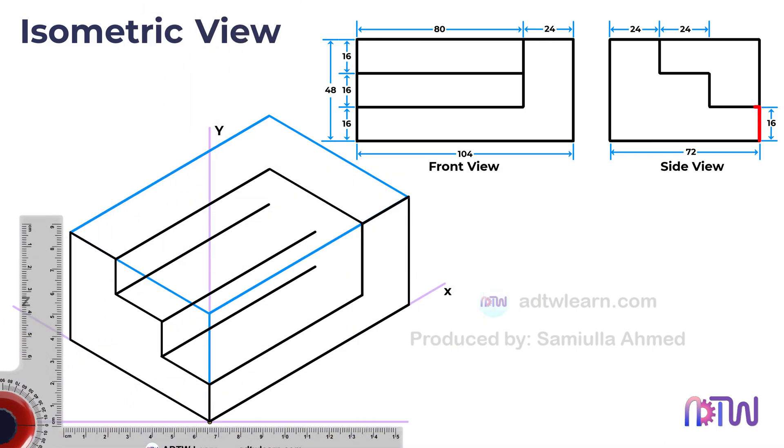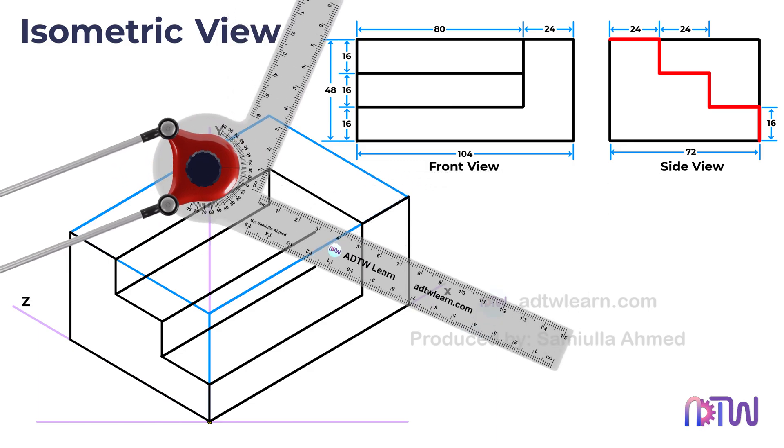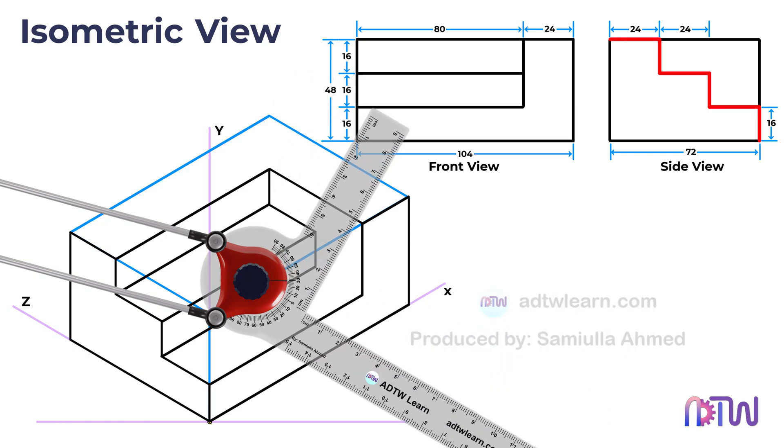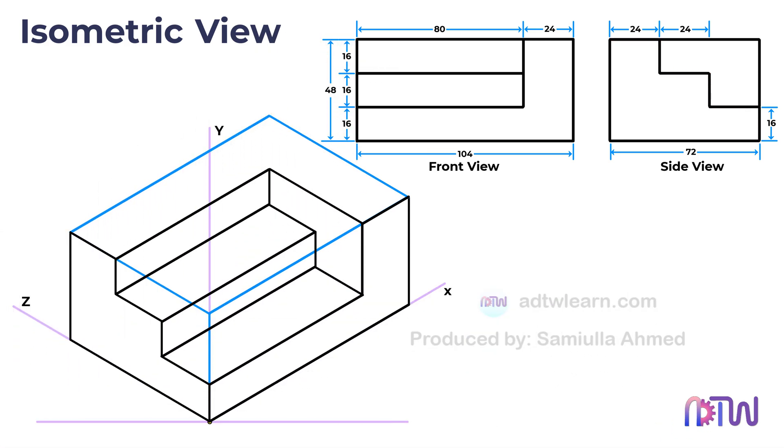Moving on, the lines we see in the isometric view represent the stairs in this structure. Therefore, we will draw lines parallel to the Y and Z axis to construct the stairs. This is the final isometric view of the object.